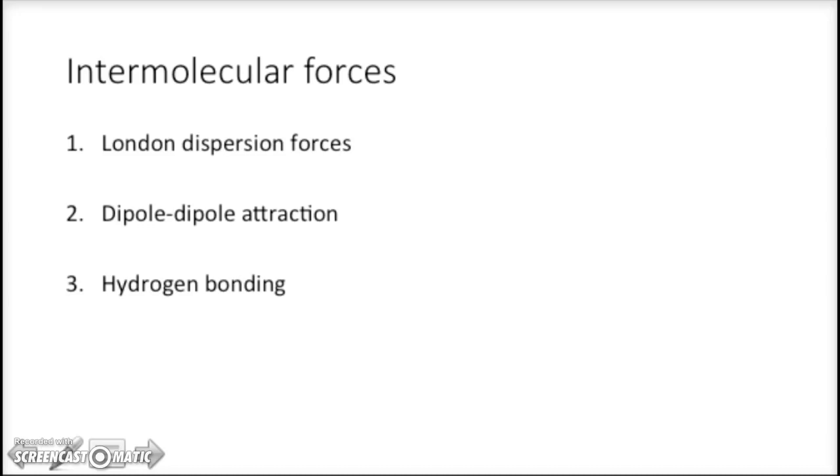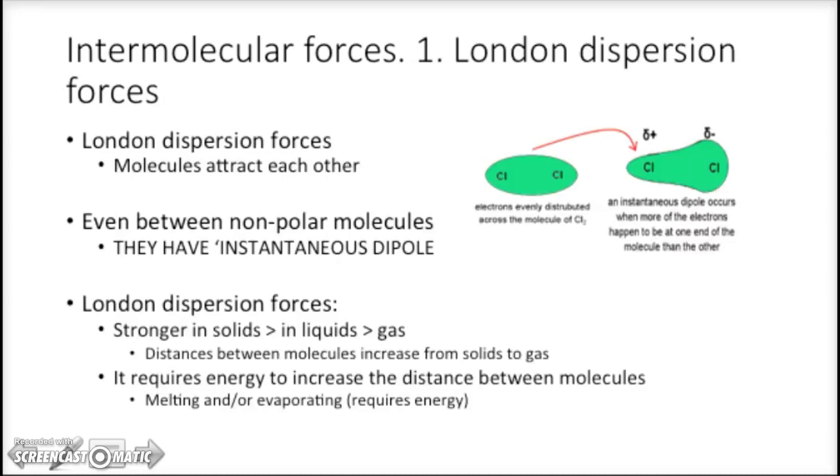We start with London dispersion forces. Two chapters ago we talked about polar and non-polar covalent bonds. Let's look at Cl2. This is a non-polar covalent bond because the difference in electronegativity between the two Cls is 0. However, in a split second, electrons are maybe more located on the Cl on the right, creating a little bit of negative charge here, a little bit of positive charge for this Cl.